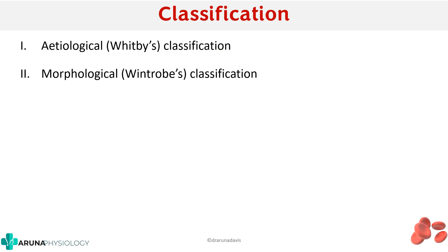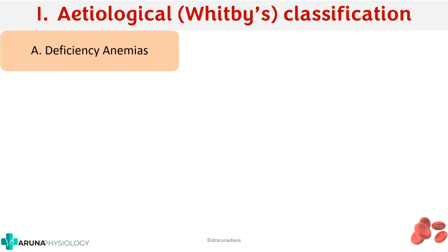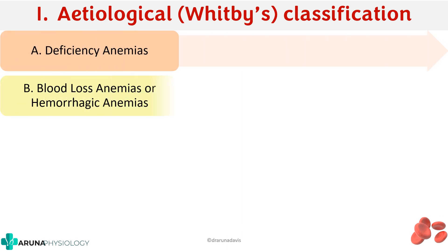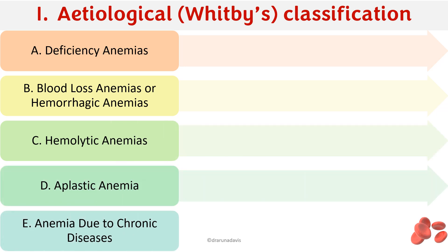Based on the cause of anemia, you can divide it into five categories: deficiency anemias, blood loss anemias or hemorrhagic anemias, hemolytic anemias, aplastic anemia, and anemia due to chronic disease.